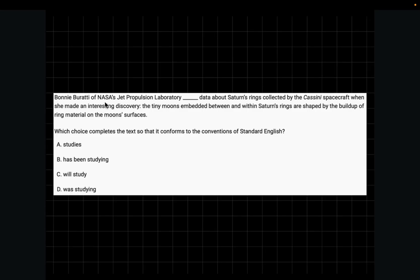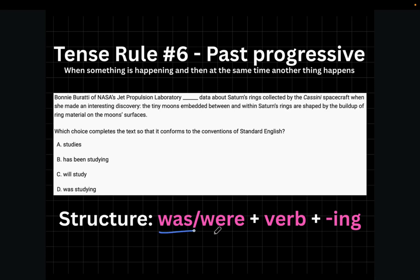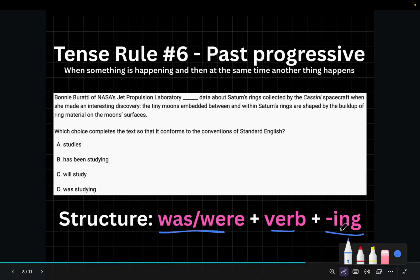Next question. Bonnie Buratti of NASA's Jet Propulsion Laboratory blanked data about Saturn's rings collected by the Cassini spacecraft when she made an interesting discovery. The tiny moons embedded between and within Saturn's rings are shaped by the buildup of ring material on the moon's surface. So she was doing something when another thing happened. And whenever this is the case, so when something is happening and then at the same time another thing happens, we use tense rule number six, which is past progressive. And past progressive is basically was or were plus the verb plus ing, which in this case would mean choice D is correct.